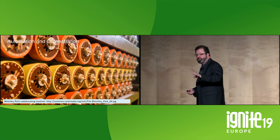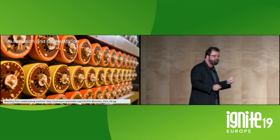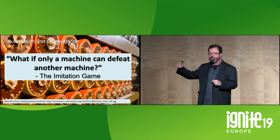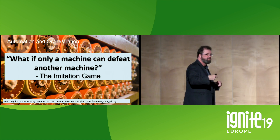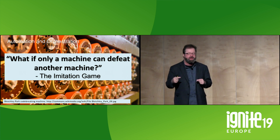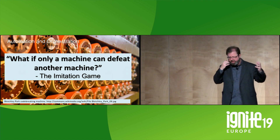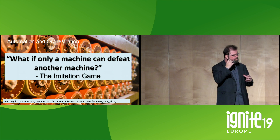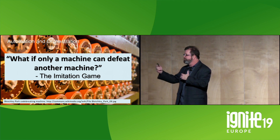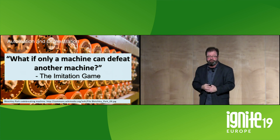Then comes creating policy. If you've seen the movie Imitation Game about breaking the Nazi Enigma codes, Alan Turing says something really profound: what if only a machine can defeat another machine? That's true — we are living in an age where our adversary is highly automated. They are more automated than we are. They have advantages we don't — for example, they don't have change control. So now we have to become as automated and as agile as our attackers. We are building a machine to defeat a machine.